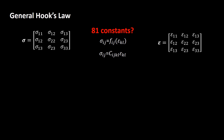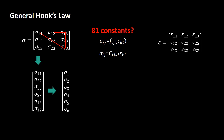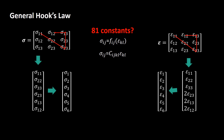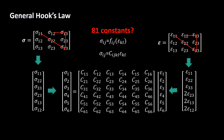But 81 constants is impractical — we should find a way to simplify this problem. Fortunately, stress and strain tensors are symmetric and we can rewrite them as arrays with six components. To relate these two arrays, we need a 6×6 stiffness matrix with 36 constants.